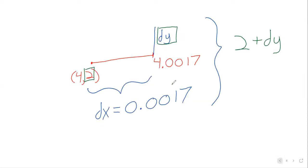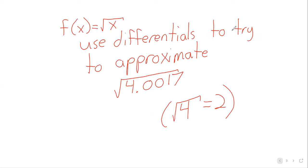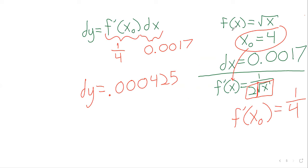Finally, we complete this. We want 2 plus dy. Well, that's 2.000425. And that is our approximation.